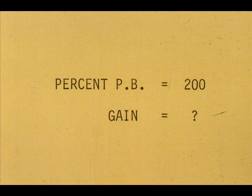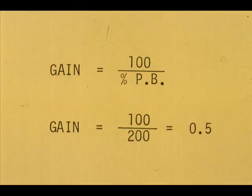The proportional band of a controller is 200. What is the gain? The gain for a 200% proportional band is 0.5.